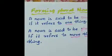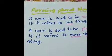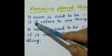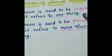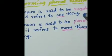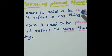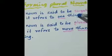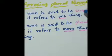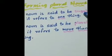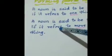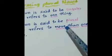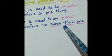First we see what is singular and plural. A noun is said to be singular if it refers to one thing. A noun is said to be plural if it refers to more than one thing.